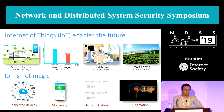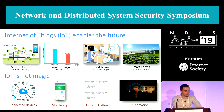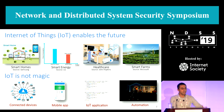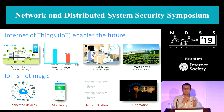IoT is not magic. Just like any other computing system, it has a well-structured architecture. In this architecture, devices sense the physical processes, and in turn they are used to actuate other devices. These devices are often connected to an edge device which controls the communication between the devices, cloud backend, and the mobile application.